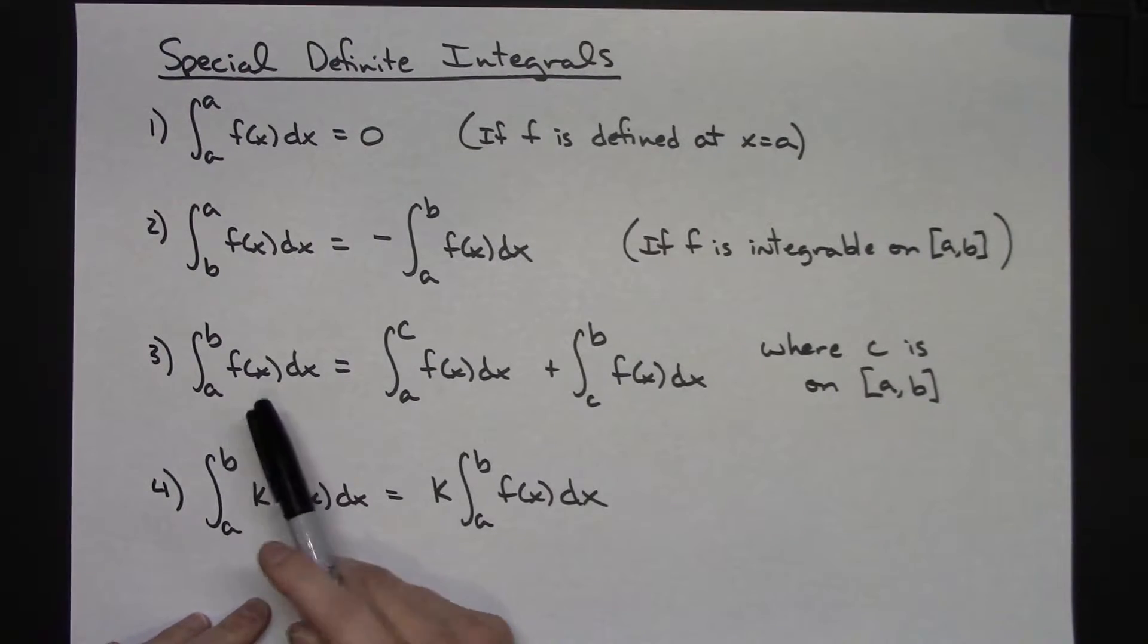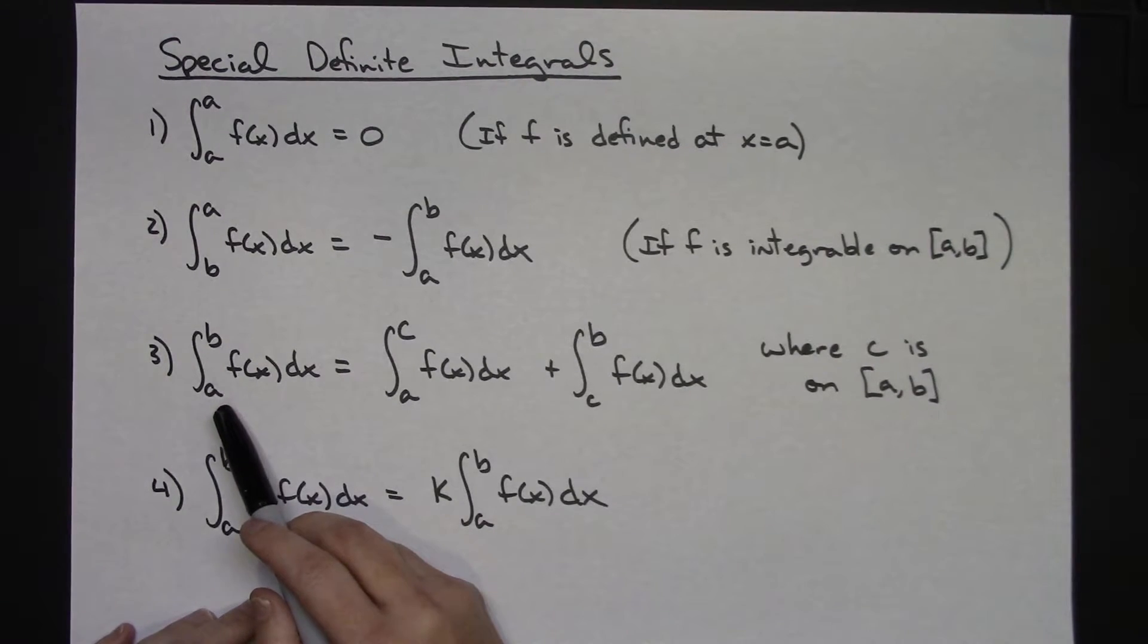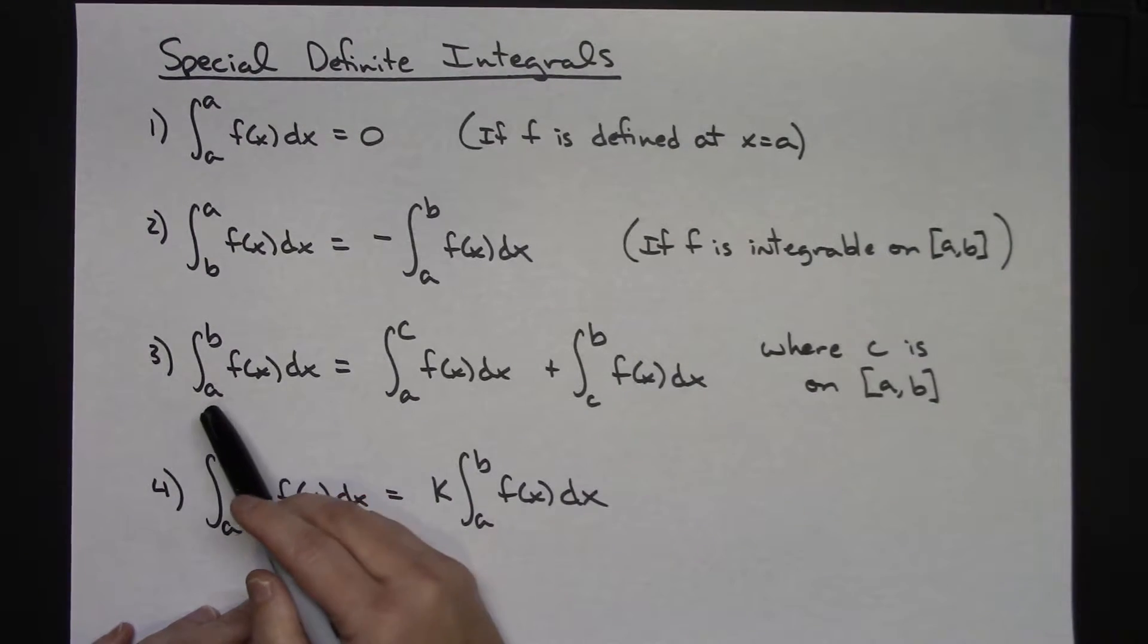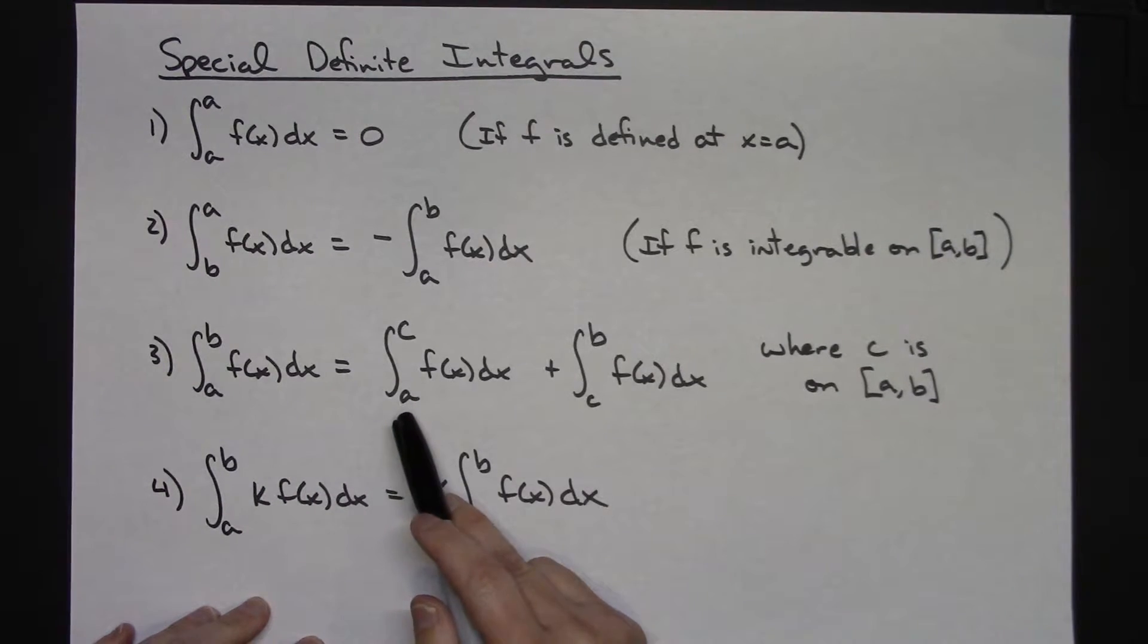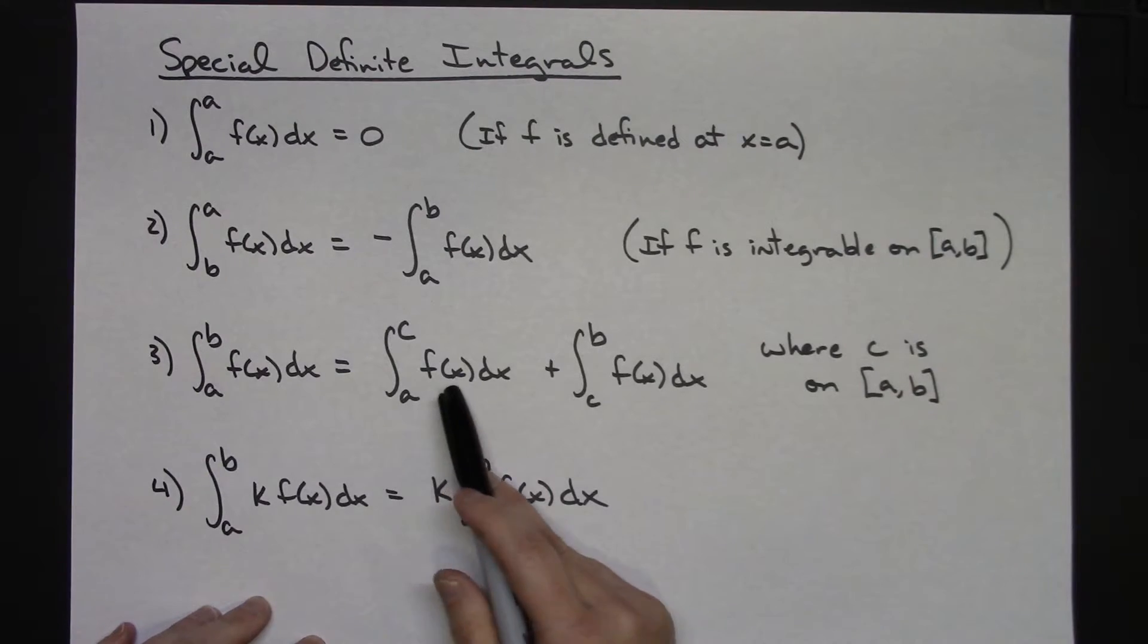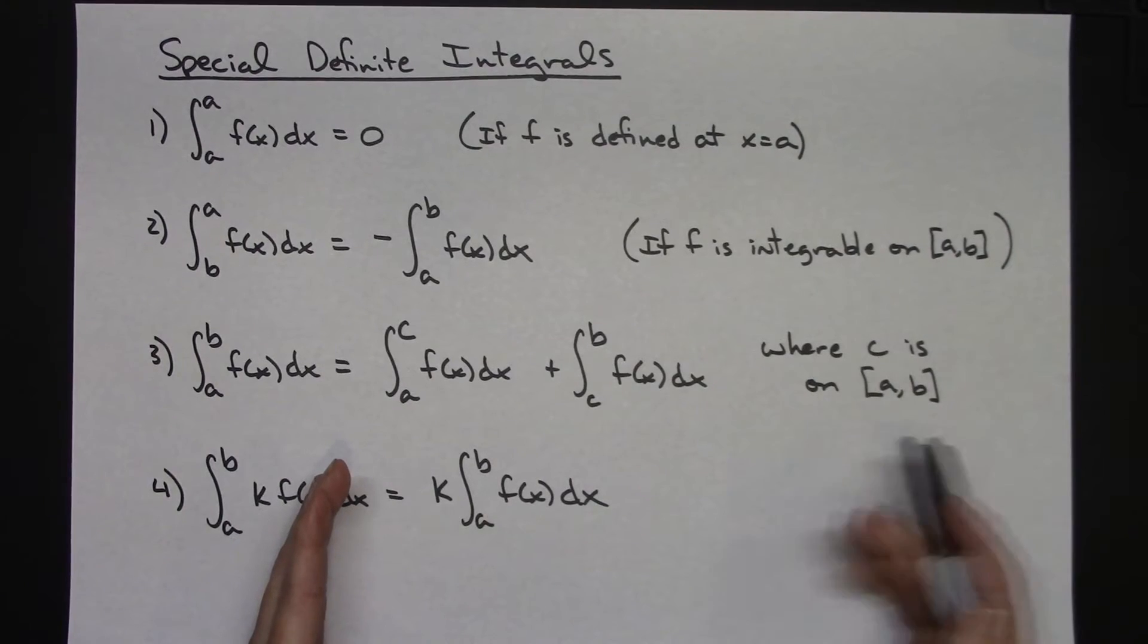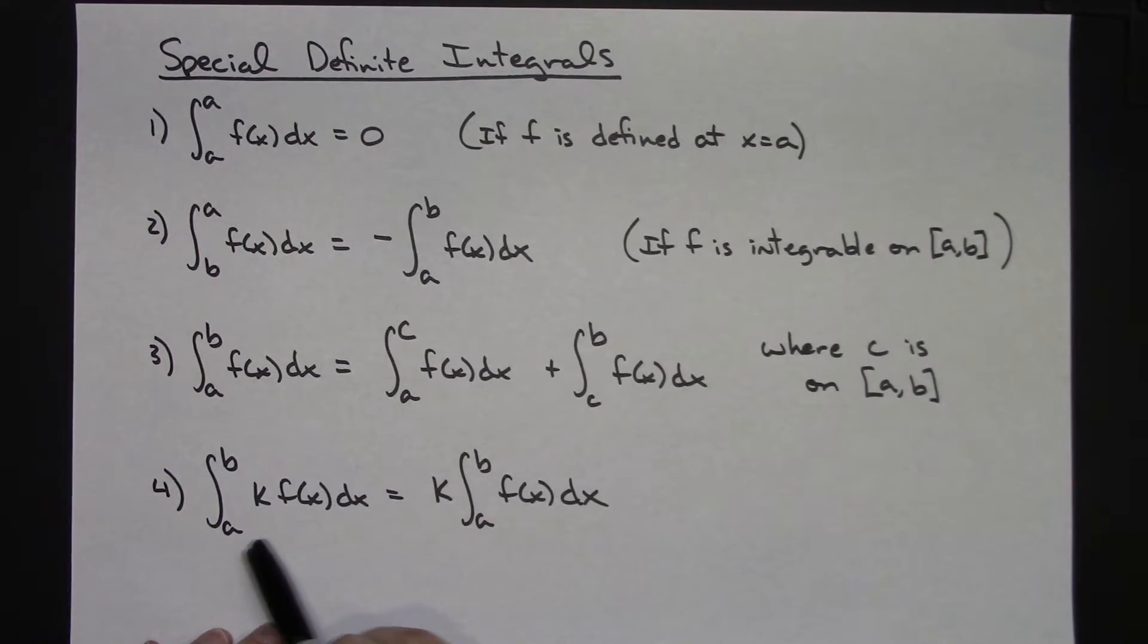And then here, this one kind of should make sense too. If I've got some interval a to b and c is inside that interval somewhere, I could divvy that up, I could split it up. So the integral from a to b of f of x dx is going to be equal to the integral from a to c of f of x, so somewhere from a to somewhere in the middle, plus the integral from c to b. So the second part of that integral, so that one should kind of make sense to you as well.